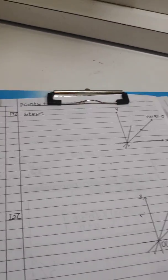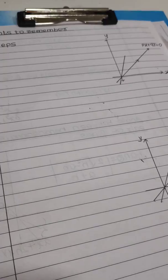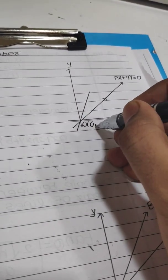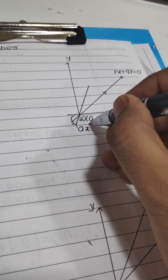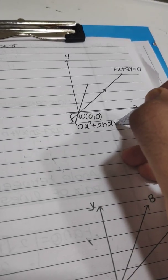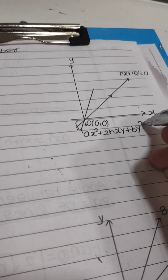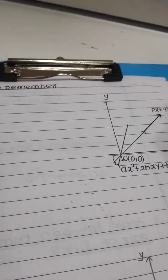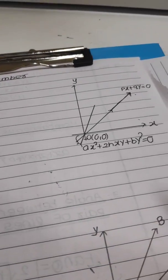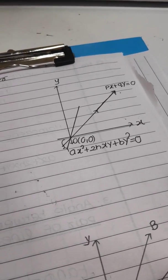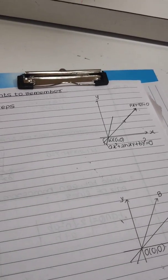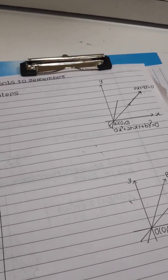Adding to this case study, there are a few more points to remember. The first one: look at the diagram. There is a homogeneous pair ax² plus 2hxy plus by² equals 0, and px plus qy is one of the coincident lines. Coincident means parallel. If px plus qy is one of the lines, we need to find the condition or the unknown value of k.